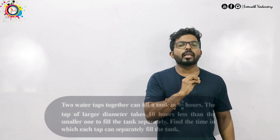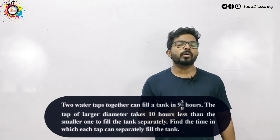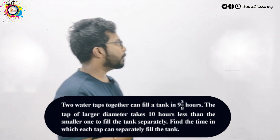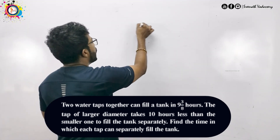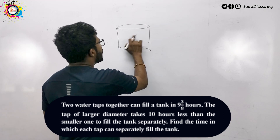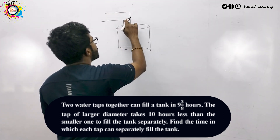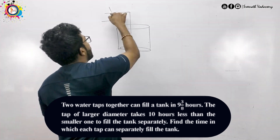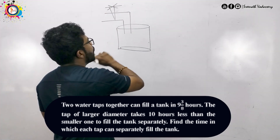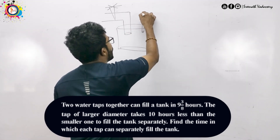A tank has two pipes. It's a large diameter pipe and a smaller diameter pipe. This is the case. It's a water tank with a large diameter pipe and a smaller diameter pipe.